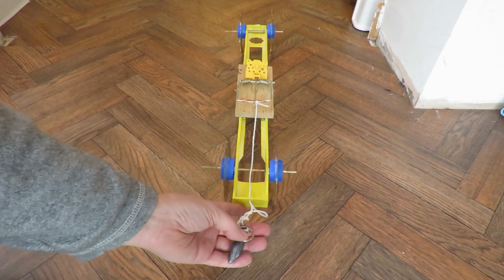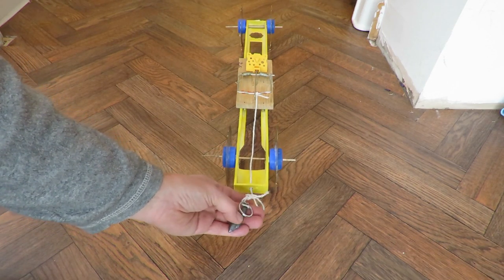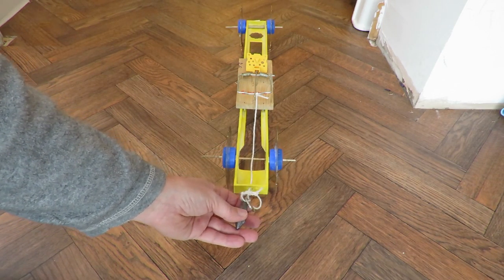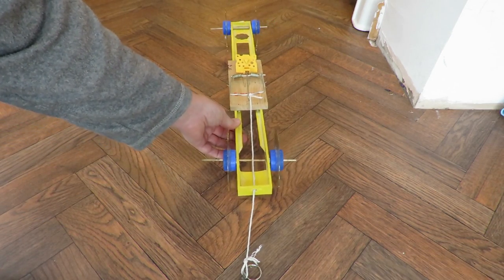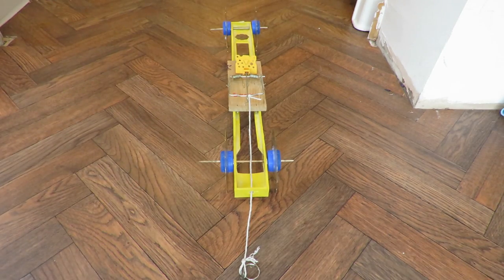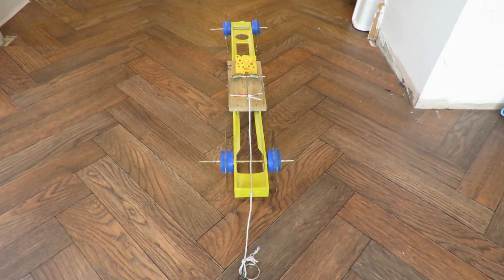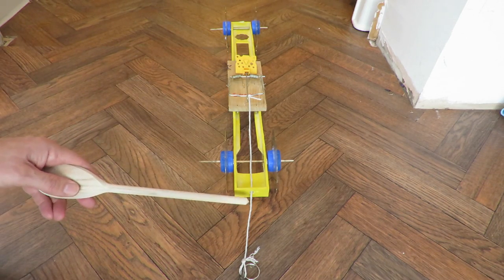The weight hits the back of the car and the idea is the momentum pushes the car forwards, but I'll tell you it doesn't work. I'll just get something to hit the rat trap with so I don't catch my fingers. The length of the string is just right so the weight hits the back of the car.